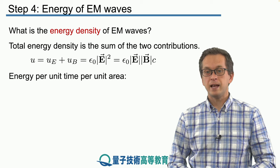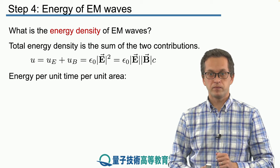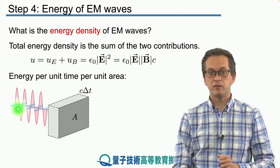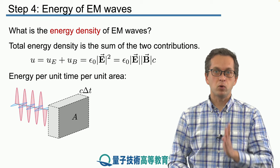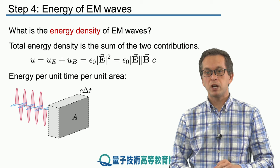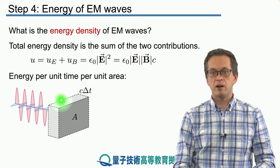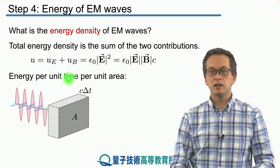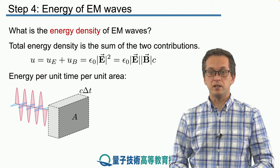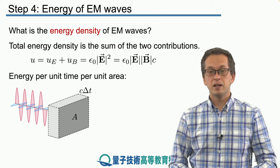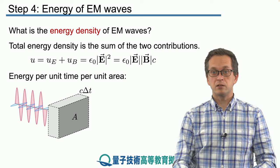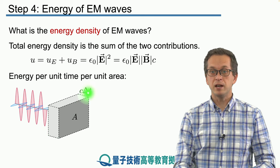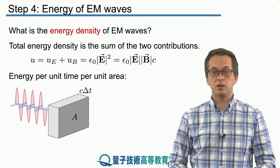Now we ask: what is the energy per unit time per unit area? We have a traveling wave composed of oscillating electric field and oscillating magnetic field. For simplicity, I'm drawing the E field polarized in the x direction and the B field oscillating in the y direction, but what we derive here holds for any polarization. This is our area A. The energy that goes through this area in time dt is related to the volume c times dt, because the electromagnetic wave propagates at the speed of light. Therefore, in the time window delta t, it travels this distance, and whatever is in the volume given by A times c times delta t will pass through area A in time dt.